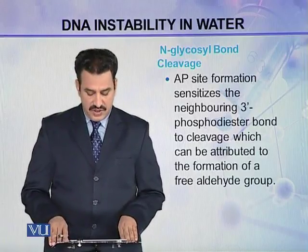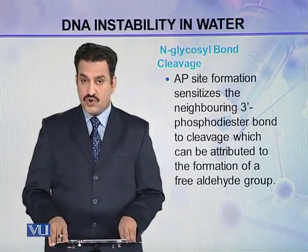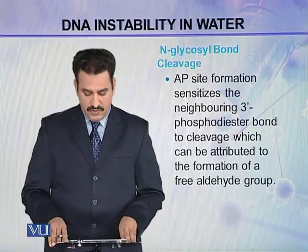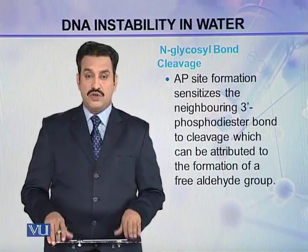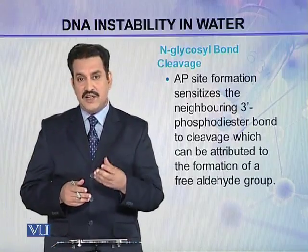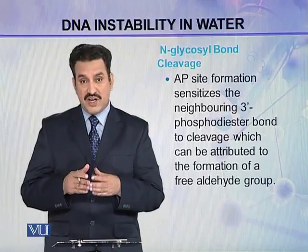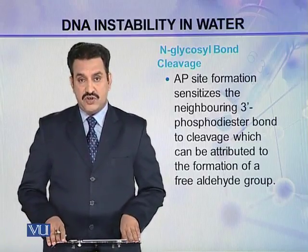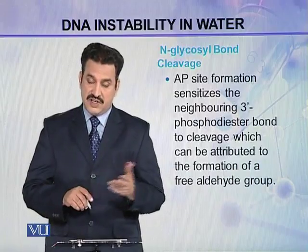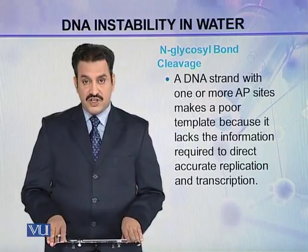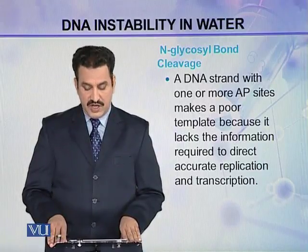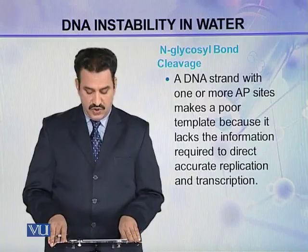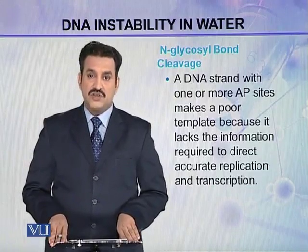AP site formation sensitizes the neighboring 3' phosphodiester bond to cleavage, which can be attributed to the formation of a free aldehyde group. This free aldehyde group sensitizes the neighboring phosphodiester bond, causing it to cleave. A DNA strand with one or more AP sites makes a poor template because it lacks the information required to direct accurate replication and transcription.